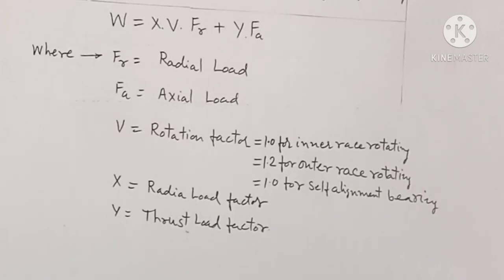given by W = X·V·FR + Y·FA where FR = radial load, FA = axial load, V = rotation factor which is taken 1 for inner race rotating and V = 1.2 for outer race rotating and V = 1 for self-alignment bearing.